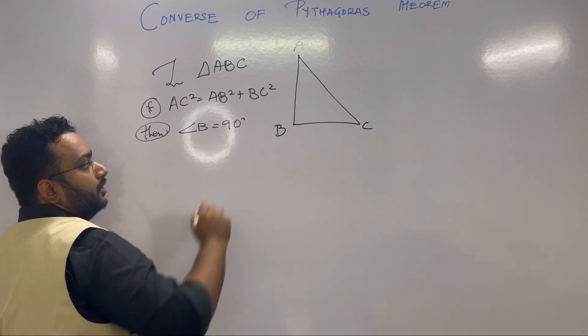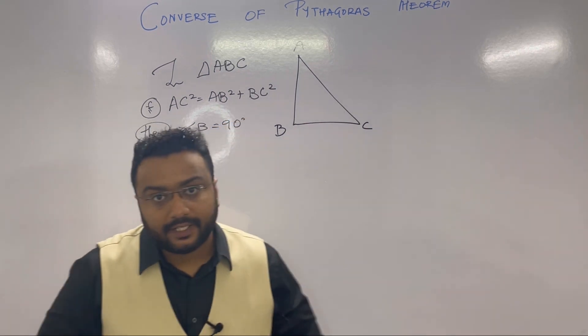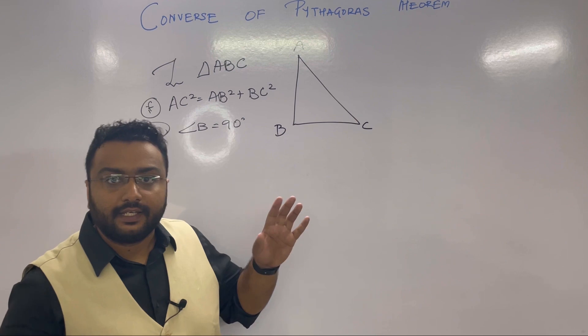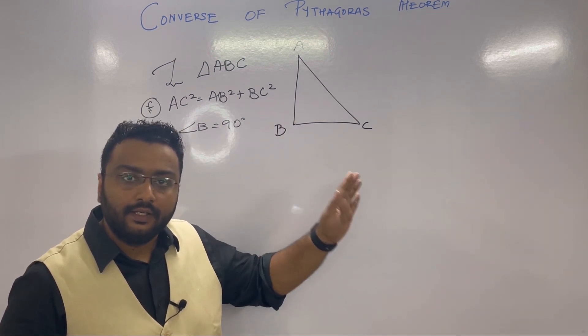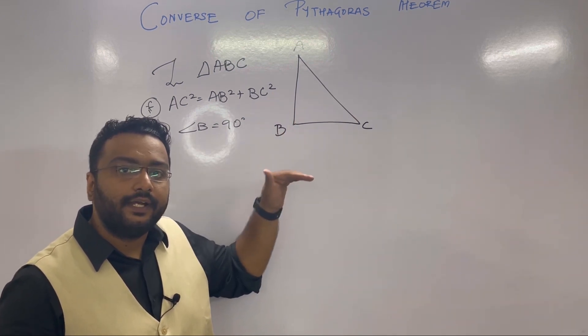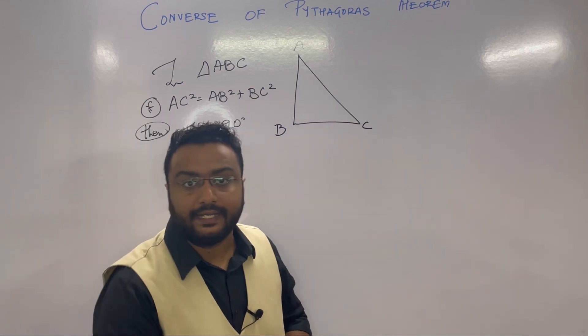In the converse of Pythagoras, what you need to do is check if hypotenuse square equals side one square plus side two square. Then you can say it's a right angle triangle.